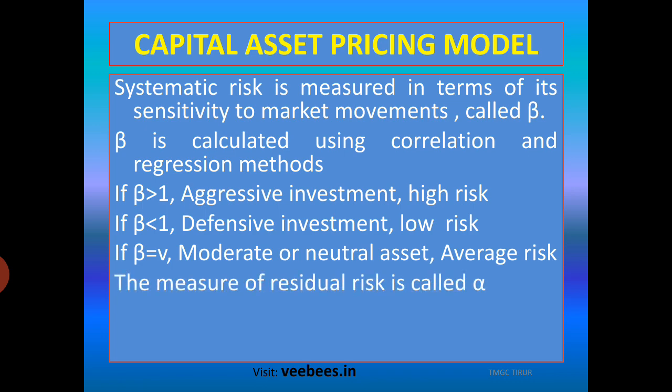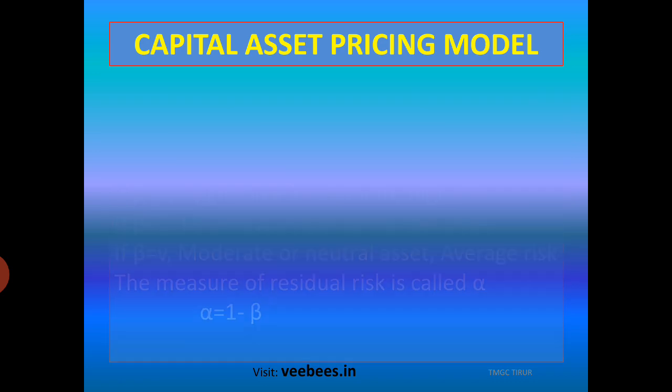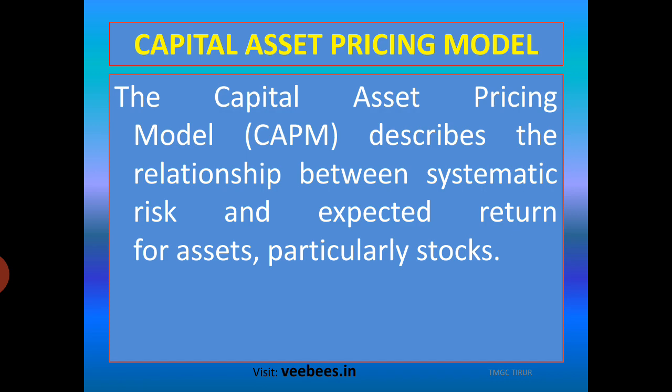If beta is equal to one, the investment is called a neutral asset or neutral investment — there is average risk. The measure of residual risk is called alpha. Alpha is equal to one minus beta, or beta is equal to one minus alpha.